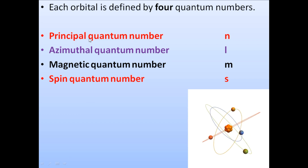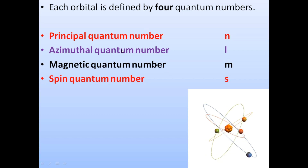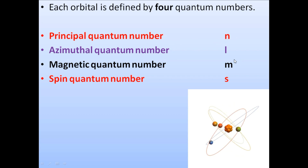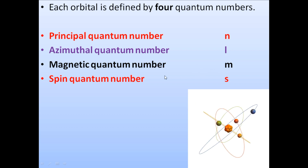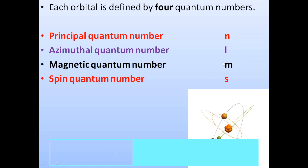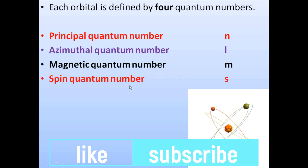So there are basically four quantum numbers: the principal quantum number, azimuthal quantum number, magnetic quantum number, and spin quantum number. We will try to cover all these quantum numbers in one lecture. The principal quantum number is denoted by n, the azimuthal quantum number by l, the magnetic quantum number by m, and the spin quantum number by s. They are always written in lowercase — if written in capital form they will be considered wrong.